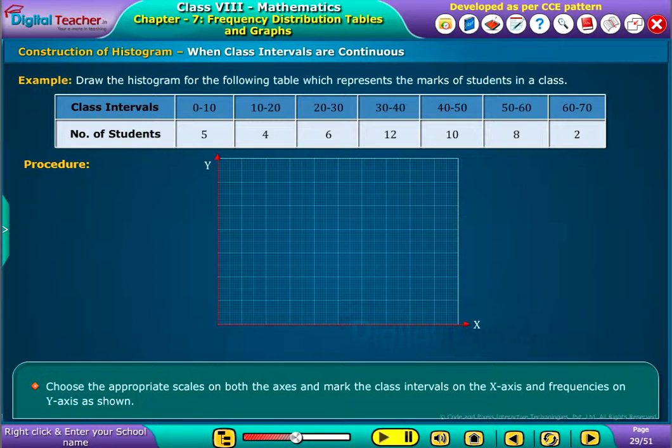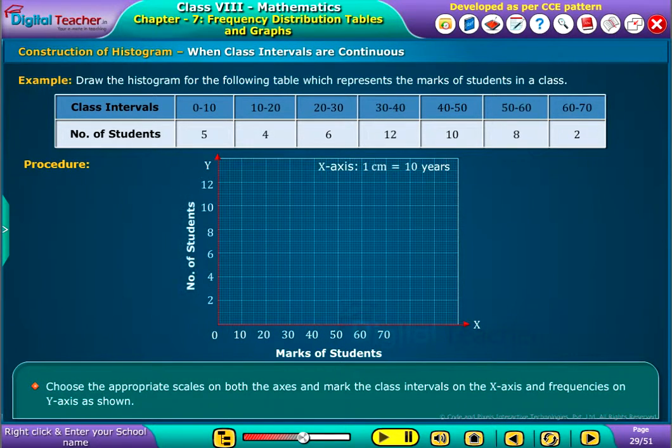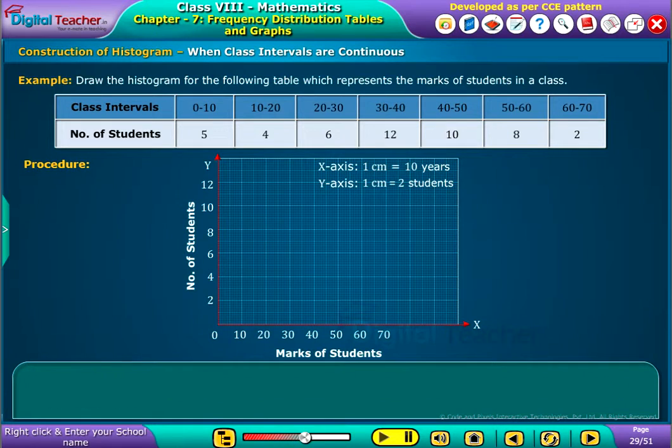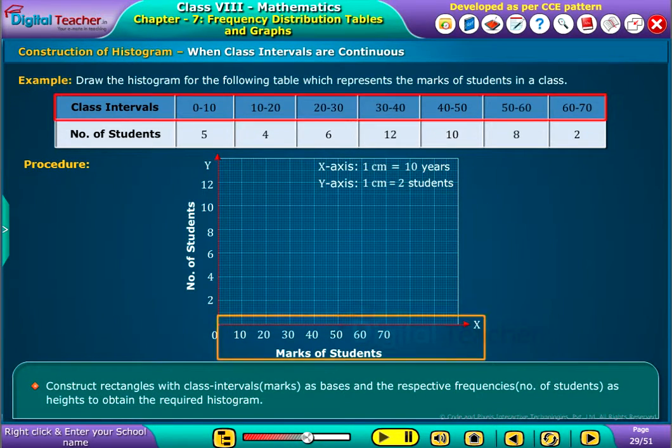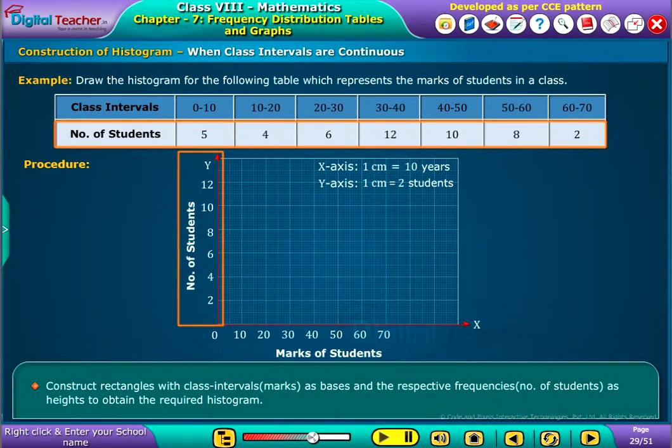Choose the appropriate scales on both the axes and mark the class intervals on the x-axis and frequencies on y-axis as shown. Construct rectangles with class intervals, that is marks, as bases and the respective frequencies, that is number of students, as heights to obtain the required histogram.